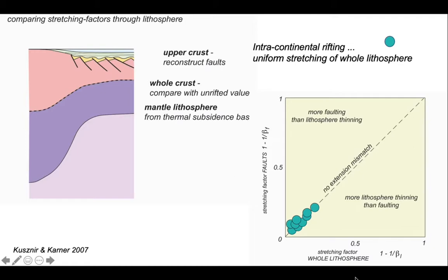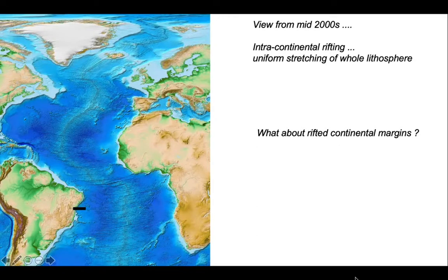This looks like it confirms the qualitative view we've developed so far. But what about rifted continental margins? Let's look at a couple of margins. We'll start off here, off Brazil.